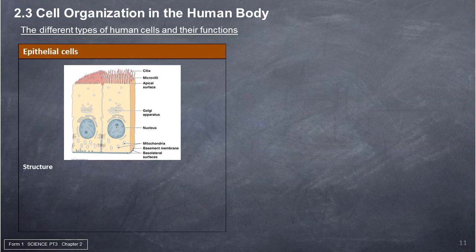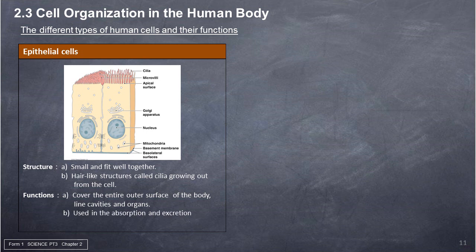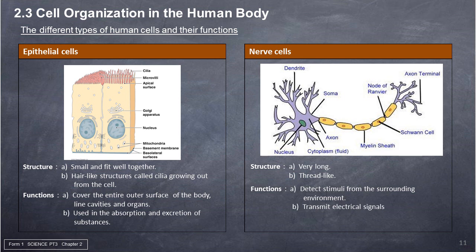Epithelial cells — structure: small and fit well together; hair-like structures called cilia grow out from the cell. Functions: cover the entire outer surface of the body, line cavities and organs; used in the absorption and excretion of substances. Nerve cells — structure: very long and thread-like. Functions: detect stimuli from the surrounding environment; transmit electrical signals to the whole body.